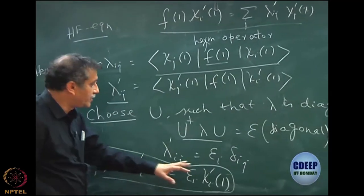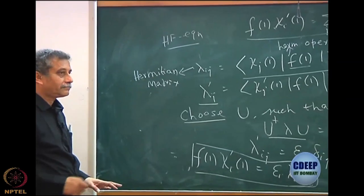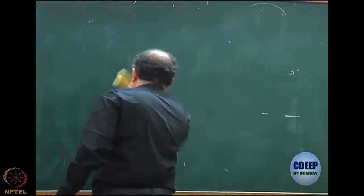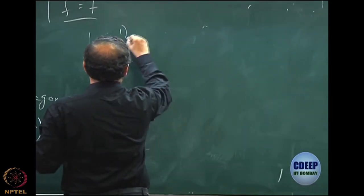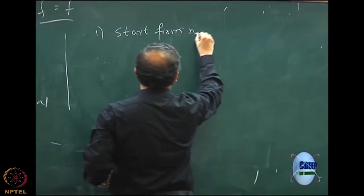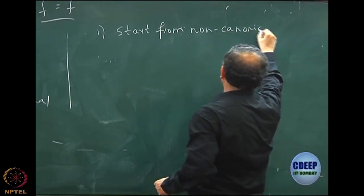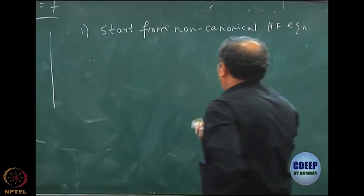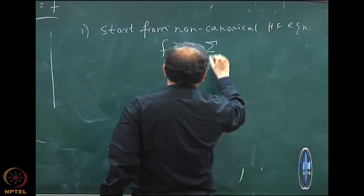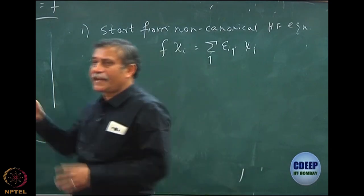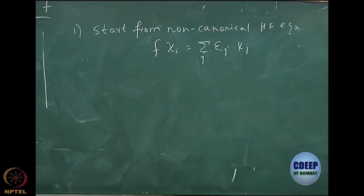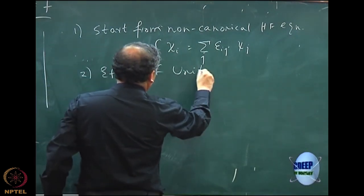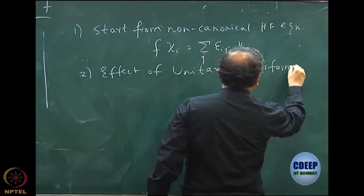I have now got a canonical form without any problem — a nice eigenvalue equation, which is what we wanted all the time. I will give the interpretation of epsilon_i. You already know these are orbital energies. Today, what we have done is we started from the non-canonical Hartree-Fock equation derived last time, which is the form: F|χ_i⟩ = Σ_j ε_ij|χ_j⟩. This is what I derived from the variation method.